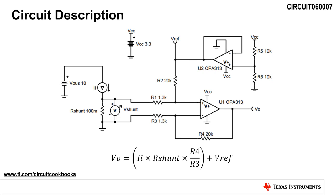This circuit is called low side because the sense resistor, R shunt, is connected to ground. Bi-directional means that the load current, I sub I, can flow in both the positive direction or negative direction.